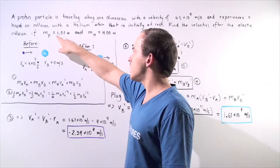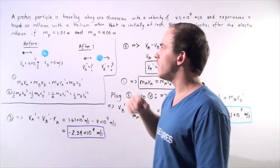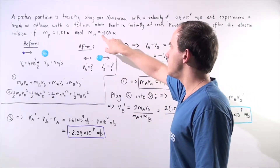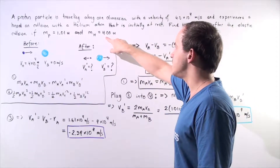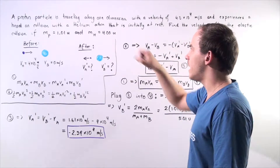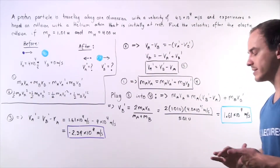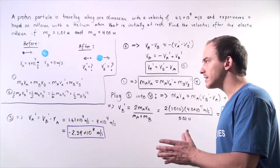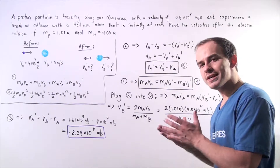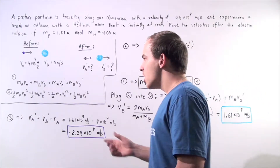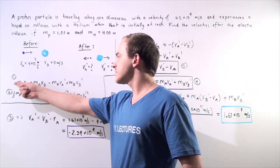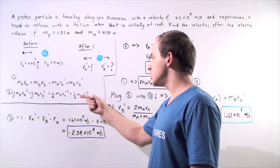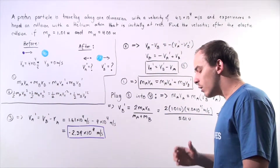The mass of the proton is 1.01 unified atomic mass units and the mass of the helium is 4.00 unified atomic mass units. We are given that our collision is elastic, which means we have conservation of momentum and conservation of kinetic energy.